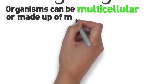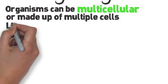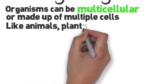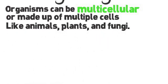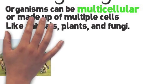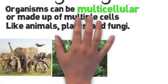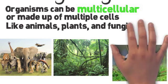So organisms can be multicellular, meaning have more than one cell. Multi means many, more than one, and cellular means to do with cells. So when we think of life, we usually think of multicellular organisms like animals or plants and even fungi.